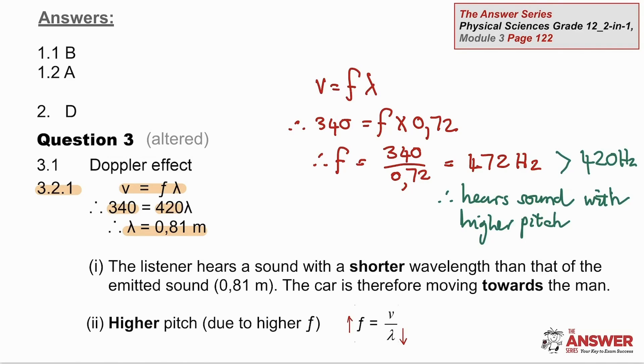Because he's hearing a shorter wavelength, the car must be moving towards the man and emitting a higher frequency. If you use the wave equation and you substitute the 0.72 meters so that you get a frequency of 472 hertz, that is greater than the 420 hertz emitted. So he's hearing a sound with a higher pitch than the sound emitted and therefore the car is moving towards the man.